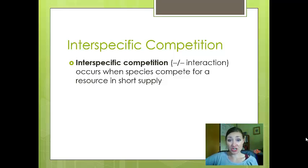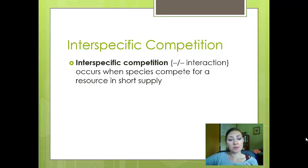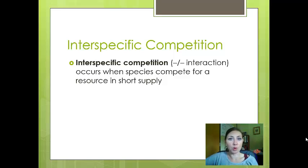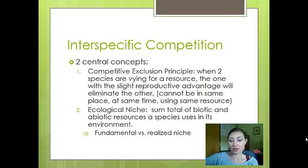Interspecific competition is a negative-negative interaction — both species engaged in competition do not benefit. Both are harmed by it, and typically we see this when members of the same species compete for a resource in short supply. Whenever there's competition, it is harmful to both individuals involved because there always has to be a winner and a loser, meaning there's not enough resources for both.